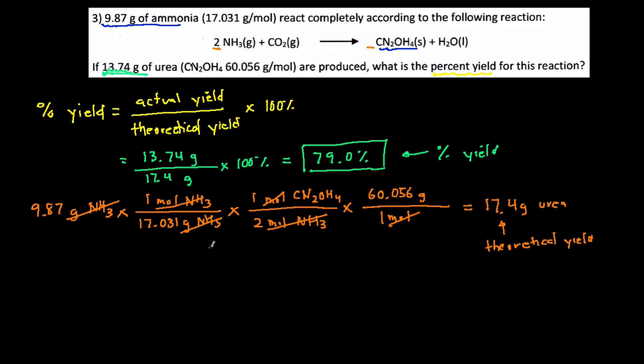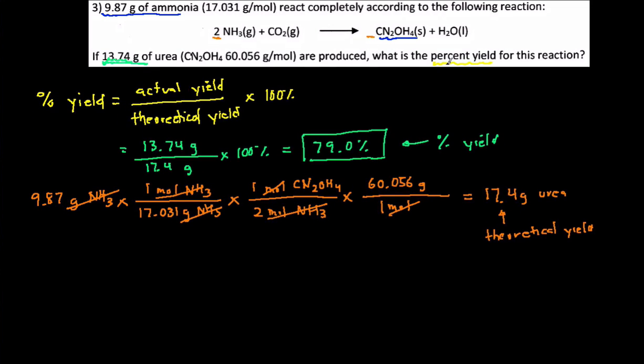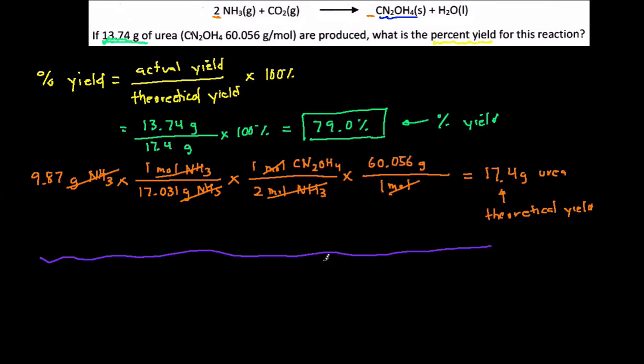Let's pretend instead the problem wasn't asking us for percent yield. Let's pretend that the problem gave us that percent yield equals 75%, and then it asks us for actual yield.